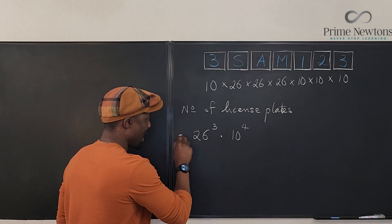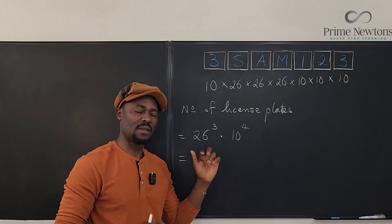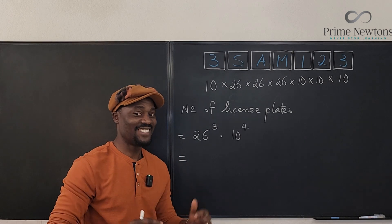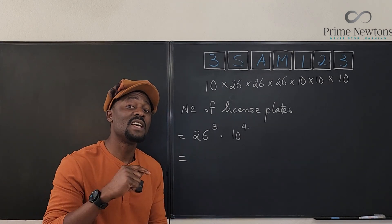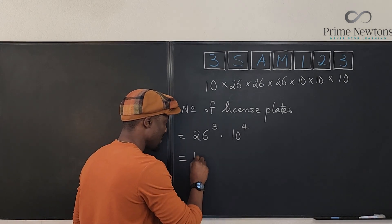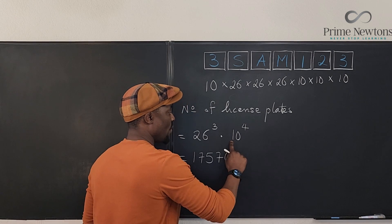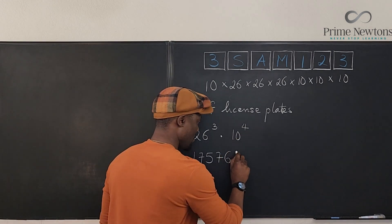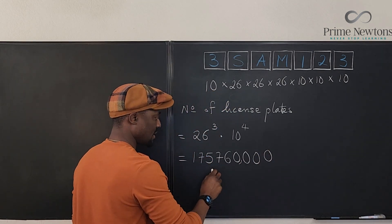So here we go. What is 26 times 26 times 26? I don't know it, I have to use a calculator. It is 175,576. With 10 to the fourth means it has four zeros - one, two, three, four. So this is a very robust system.